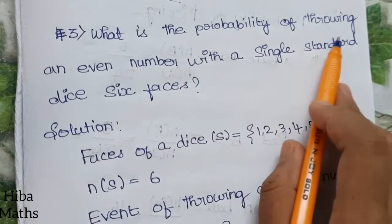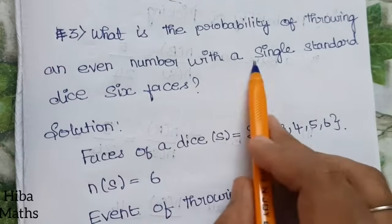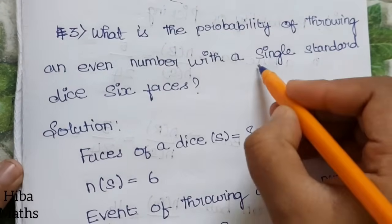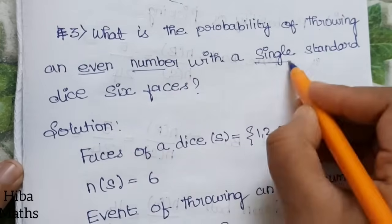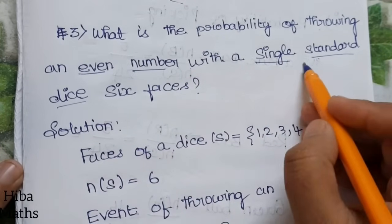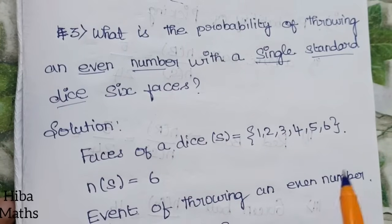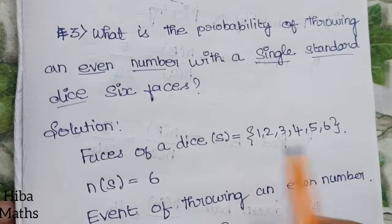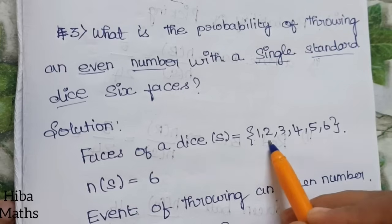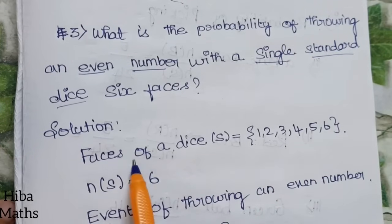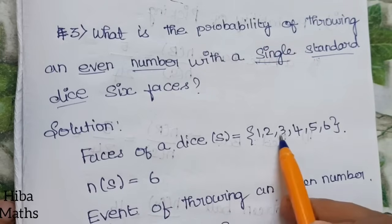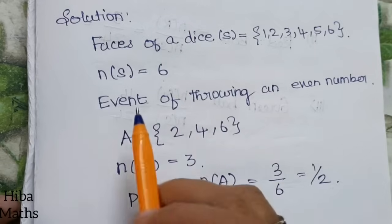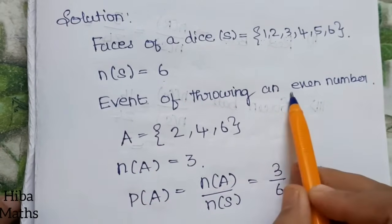Third question: what is the probability of throwing an even number with a single standard dice? A dice has six faces. When we roll a dice, the sample space is 1, 2, 3, 4, 5, 6, so n of S equals 6. The event is throwing an even number.